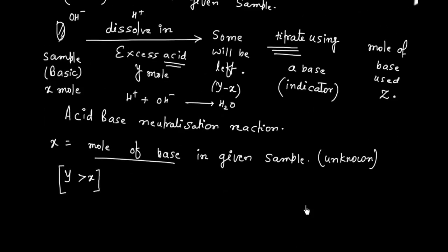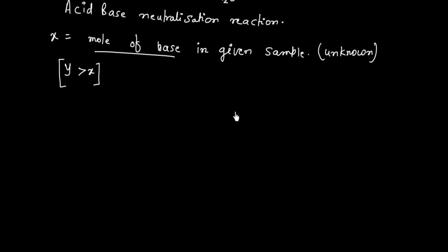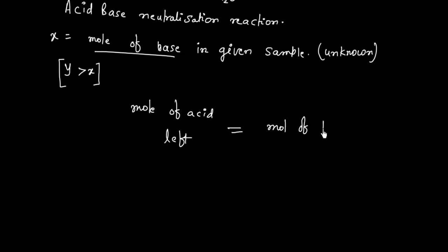If I know the moles of base used, I can find the moles of acid left — and both should be equal. If 1 mole of acid is neutralized by 1 mole of base, then moles of acid left equals moles of base used.